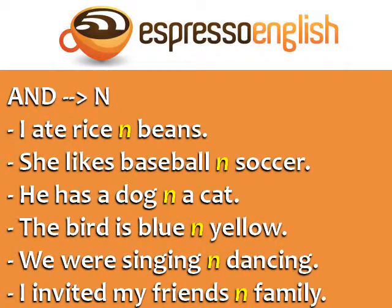The word 'and' often becomes 'n': 'I ate rice and beans,' 'She likes baseball and soccer,' 'He has a dog and a cat,' 'The bird is blue and yellow,' 'We were singing and dancing,' 'I invited my friends and family.'